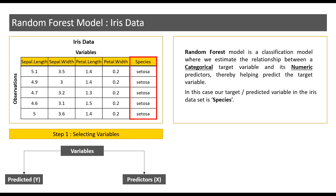Here, we have chosen the predicted variable as species. We will choose the rest of the variables as predictors. Remember, when we are selecting variables, the only rule as such is that the y or the predicted variable has to be categorical, and it is preferable that the x variables or predictors are numeric in nature.